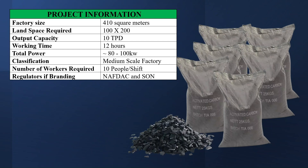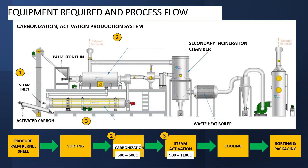Let's talk about the equipment required and the process flow. I know this may look scary, but you need to focus on the process. There are three things I want you to focus on: the steam boiler, the carbonization furnace, and the activation furnace. Activated carbon is produced in a two-stage process. The palm kernel shell gets carbonized in the carbonization furnace, and this is done by heating the kernel shell between 500 to 700 degrees centigrade. At this stage, all you're doing is producing charcoal — nothing different from what is currently being done today in Nigeria. The locals produce charcoal, and the word carbonization in this context is just a fancy word for charcoal production.